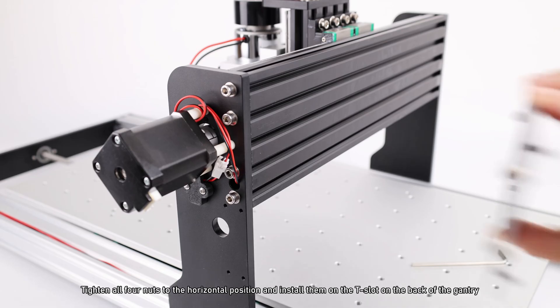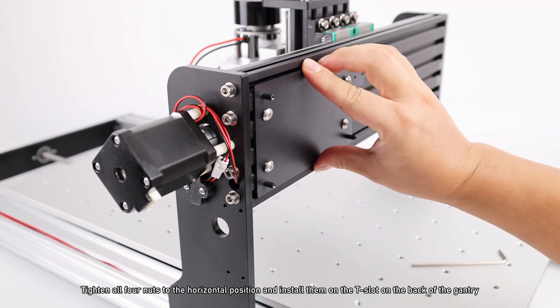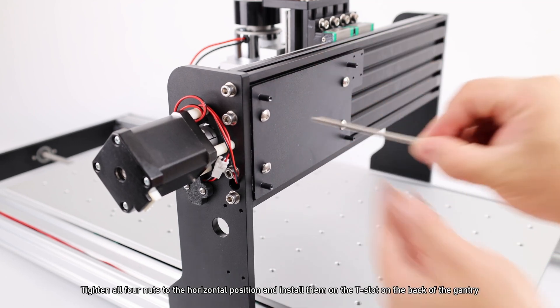Tighten all four nuts to the horizontal position and install them on the T-slot on the back of the gantry.